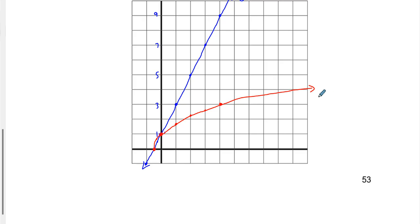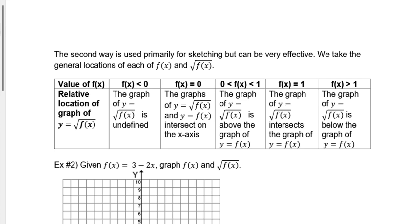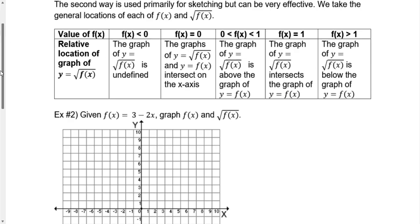Do you have to go through all of this extremely convoluted process for every single question? No, because there's an easier way. It's looking at the key characteristics of this graph that help us sketch it. The second way is primarily used for sketching, but it can be very effective — we take the general locations of those key values.